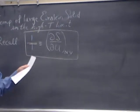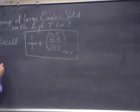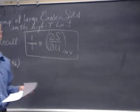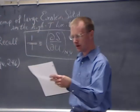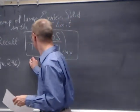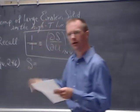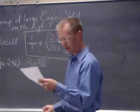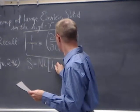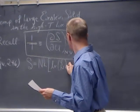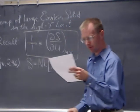Taking equation 2.46 from the last chapter, which gives us the entropy of a large Einstein solid in the high temperature limit: S equals Nk times the natural log of Q over N plus 1.